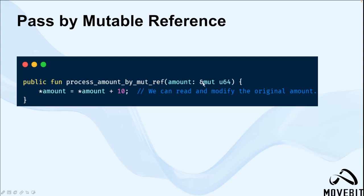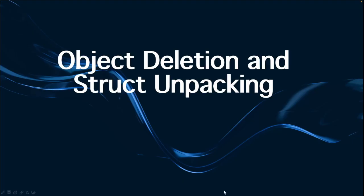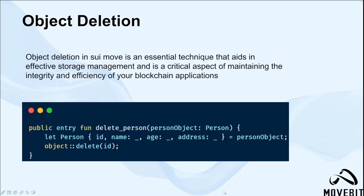Let's see how to implement the object deletion and structure unpacking. The object deletion is a crucial component in programming, particularly in languages that deal with object-oriented programming or that utilize complex data structures. It refers to the process of removing an object from memory once it is no longer needed. This can be particularly important in managing storage usage and preventing memory leaks in your programs.